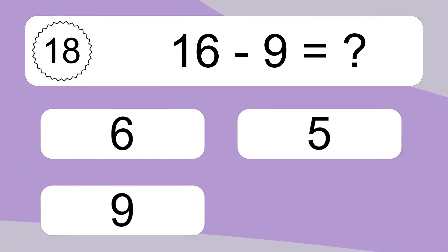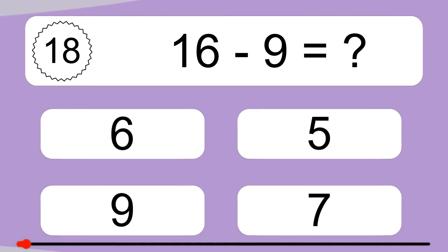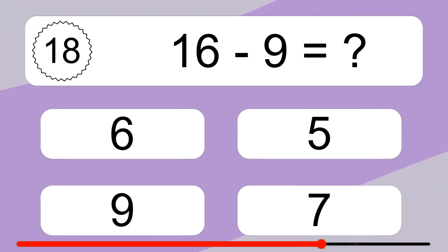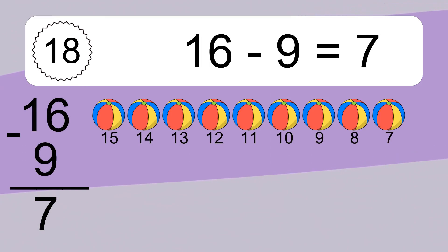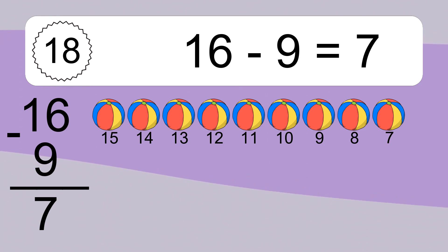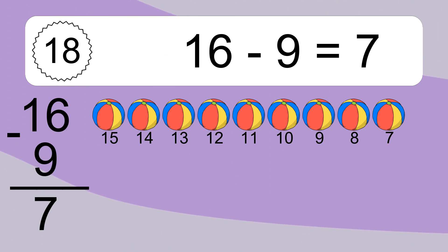16 minus 4 equals what? 16 minus 4 equals 12. Let's count it. 15, 14, 13, 12, 11, 10, 9, 8, 7.